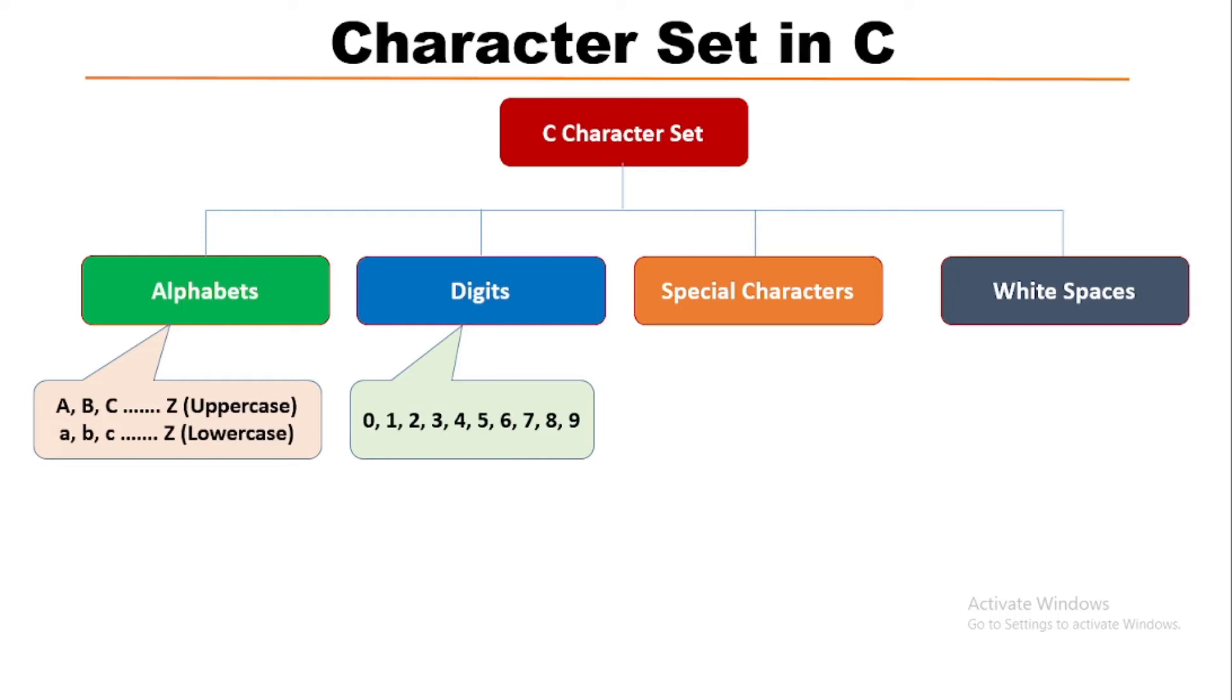Next is special characters. We use some special characters in C language for some special purposes such as logical operations, mathematical operations, checking of conditions, backspace, etc. These are special characters which are mainly used in C programming.